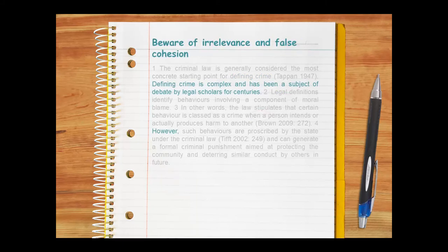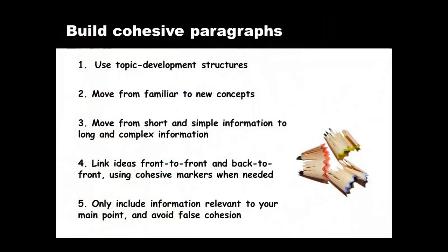There are two things, however, that can disrupt cohesion. Imagine if the writer included an extra sentence and an extra connective in the paragraph we've just looked at. The extra sentence contains information that detracts from the writer's main point — in the context of this paragraph, the sentence is irrelevant. In addition, the use of the connective 'however' is confusing and makes no logical sense. It's an example of false cohesion: trying to make ideas seem cohesive when they're not. In summary, you can write cohesive paragraphs for crime and society if you follow these guidelines.